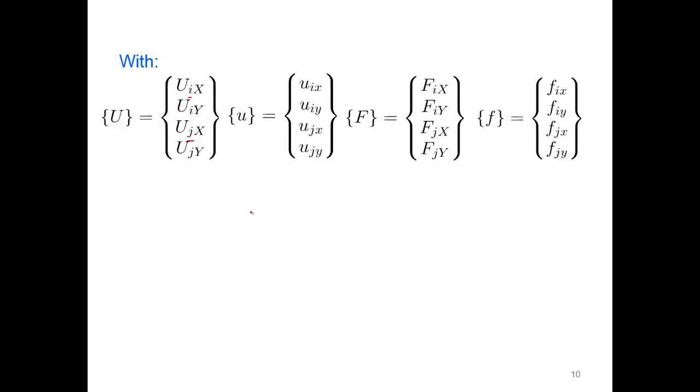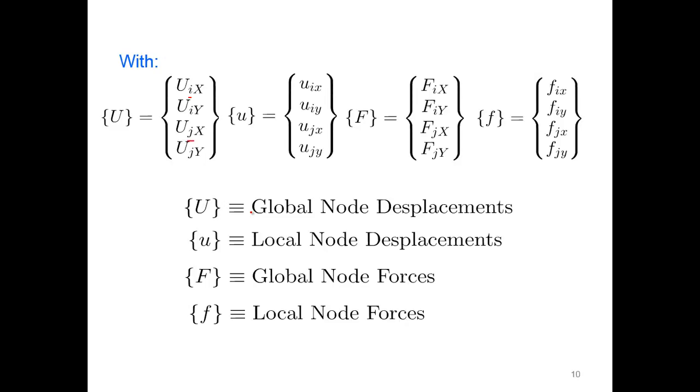We have these displacements, the global displacements at either node, node I and node J of our member. From those, we also have some local displacements as well as global and local forces. All of those, the notation as we've discussed, are there.